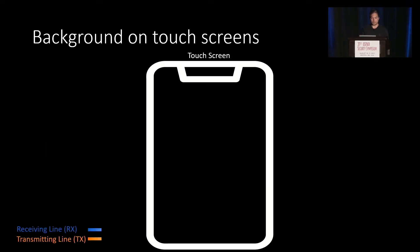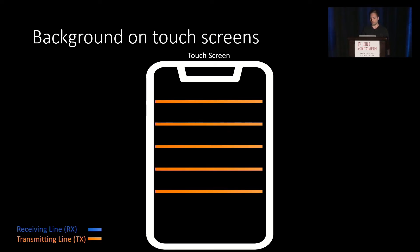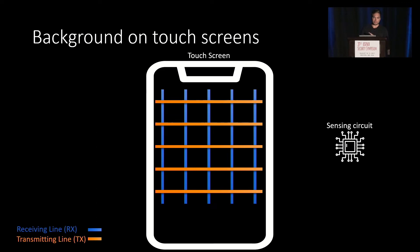First, some background about a touchscreen. You can imagine a touchscreen consisting of a mesh of horizontal transmitting lines and vertical receiving lines, which do not touch itself because they are separated by a sheet of glass. And then there is the sensing circuit, which is connected to these receiving and transmitting lines.